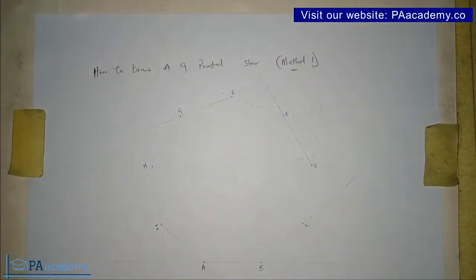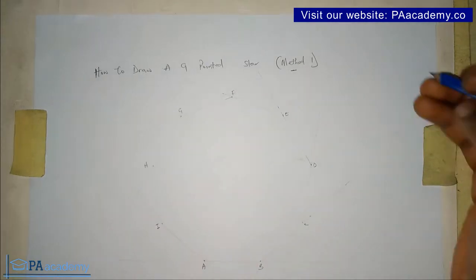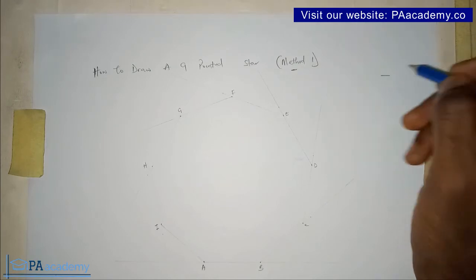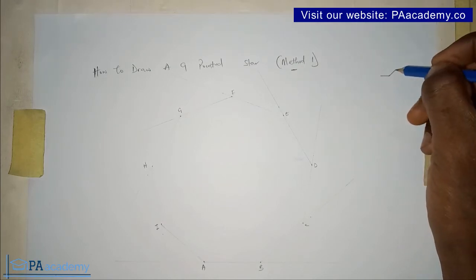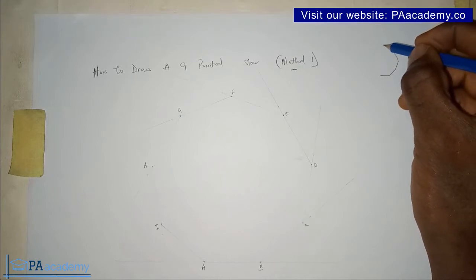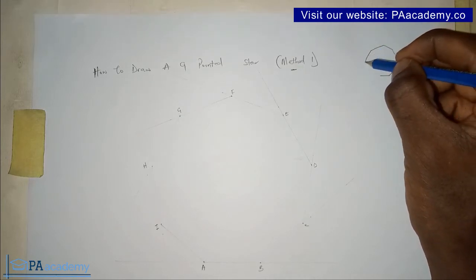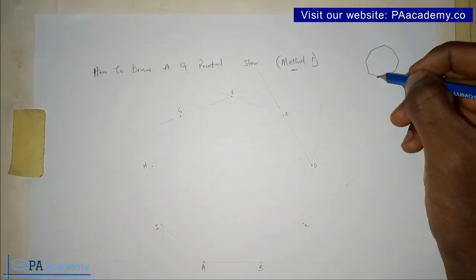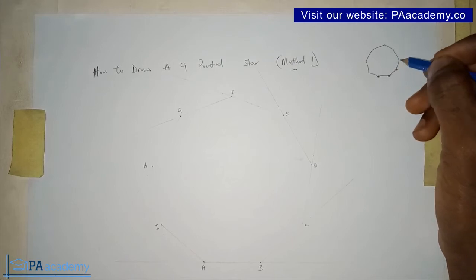We are going to be having nine vertices since we are dealing with a nonagon and nine-pointed star. Let me just draw a very bold one here. Let's take this, this is just a free-hand sketch as our nonagon. Nine sides, so all these points where these lines are meeting each other, they represent the vertices.